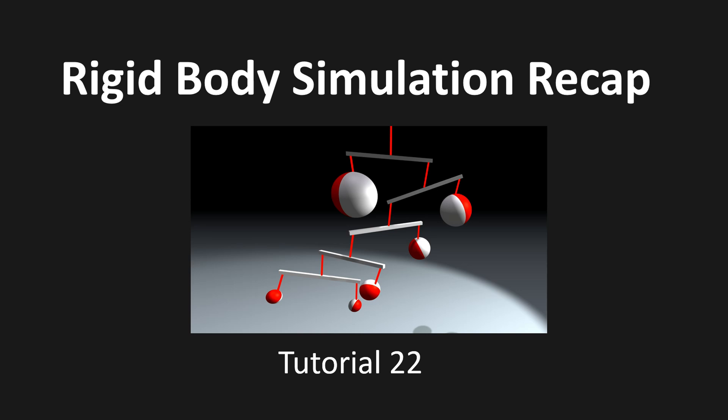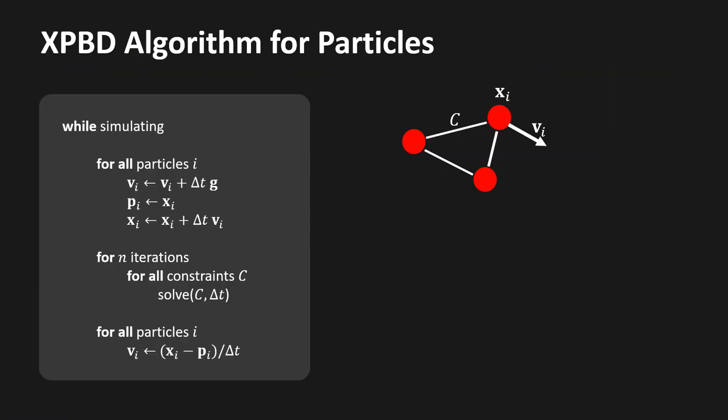Have a look at tutorial number 22 for a detailed explanation. The traditional position-based dynamics method uses particles. Here you see the simulation loop in pseudocode. In every time step, we first perform what is called an integration step. We run through all the particles, add gravity times the time step size delta t to the velocity, store the position x in the variable p, and then add the velocity times the time step size to the position. This integration method is called the semi-implicit Euler method.